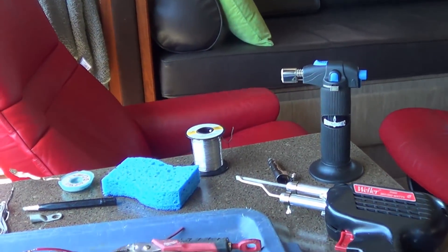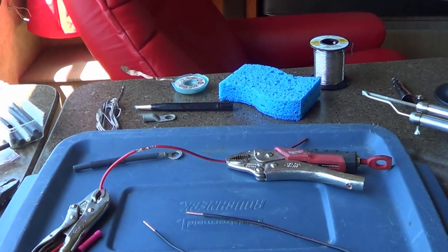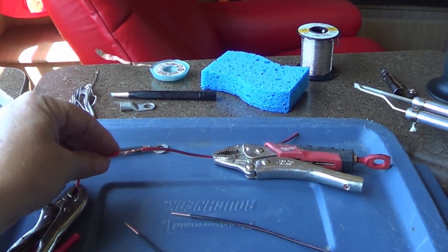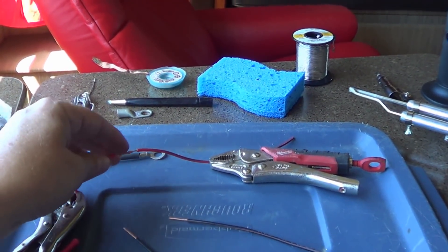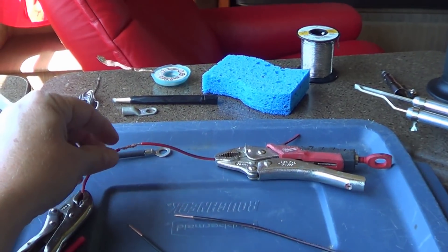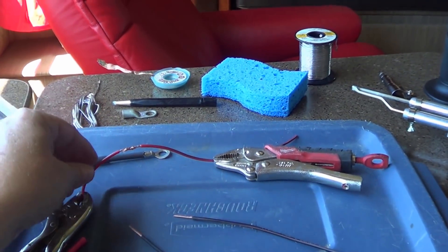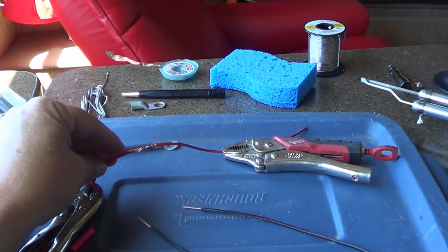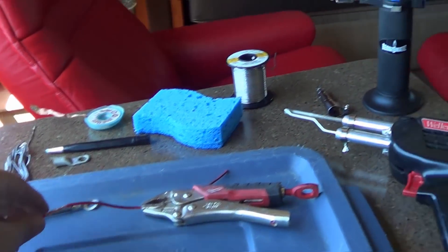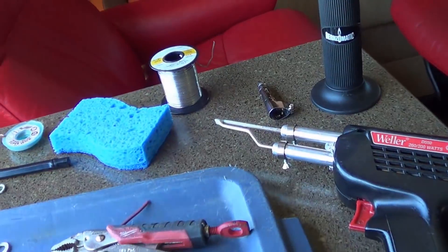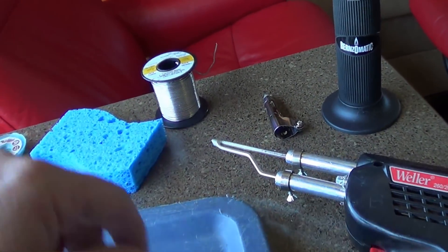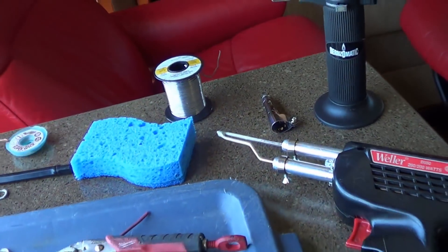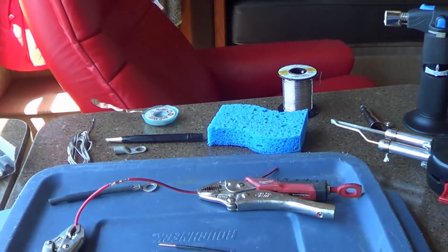Another big thing with soldering is clean, clean, clean. You want a clean connection so you want the wire to be freshly stripped. You don't want to use an old piece of wire that's gotten oxidized because solder doesn't stick to oxidized metals and wires. Also the tips of your iron, you want to clean them as well. Tin and clean them so you use a sponge, usually is a good thing to clean your tip. I'll show you that when I do a demo here.